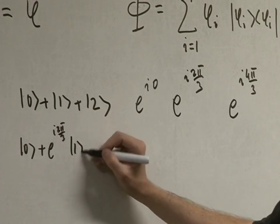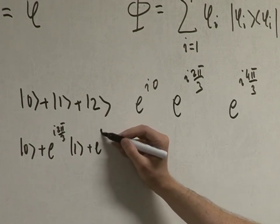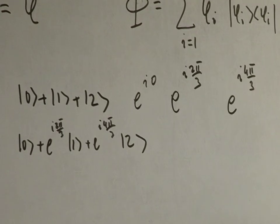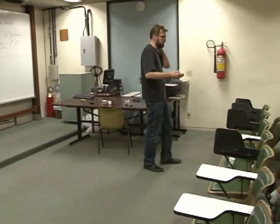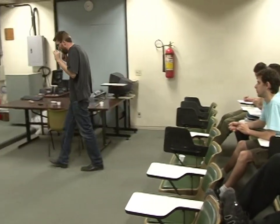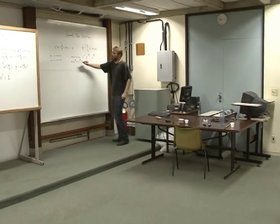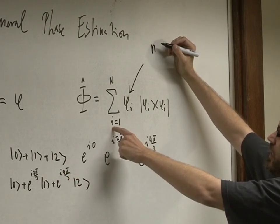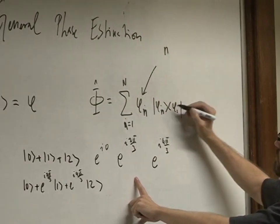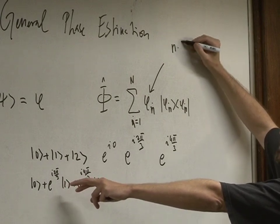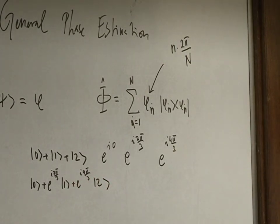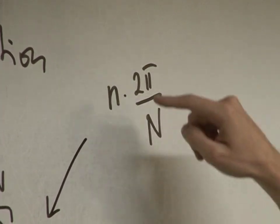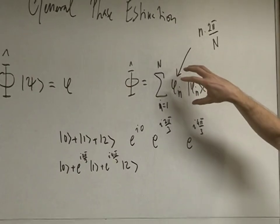Expanding the n-qubit state: I start with all zeros, then add the state with a single excitation — which is a symmetric superposition of all n possible positions of one excitation — weighted by e^(iφ). The next state contains two excitations symmetrically superposed, weighted by e^(i·2φ). The pattern continues, and combining them intelligently with the quantum Fourier transform extracts the digits of the phase, connecting to the quantum phase estimation algorithm underlying Shor's algorithm.